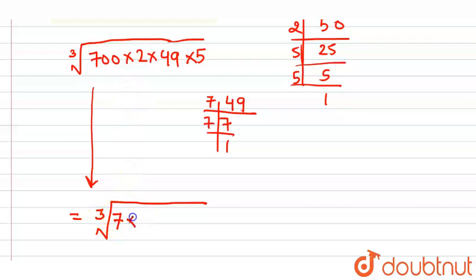7 × 2 × 2 × 5 × 5, then comes 2 again, then comes 49 which is 7 × 7, and then comes 5.